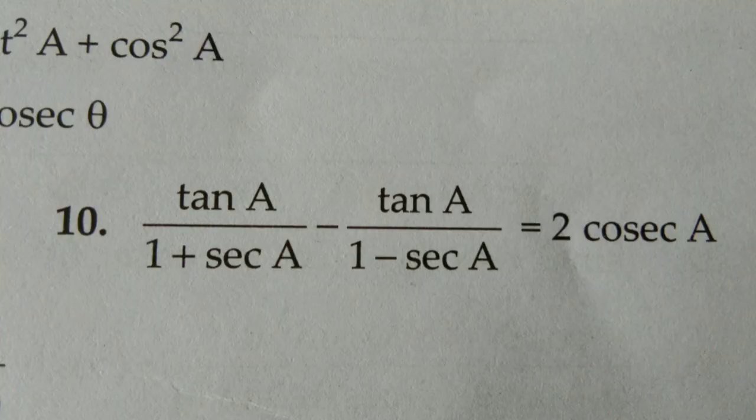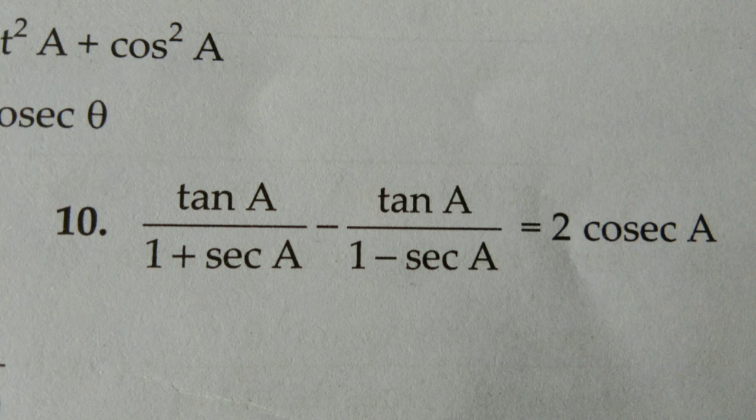Number 10 has fractions. There are two fractions. Take LCM: 1 plus cos K into 1 minus cos K — using A plus B into A minus B equals A square minus B square. Note that in this question, unlike the previous one where you split the numerator using LCM, here you split only the numerator. You can split only the numerator. Okay?